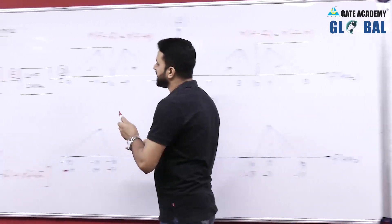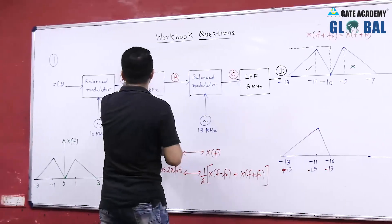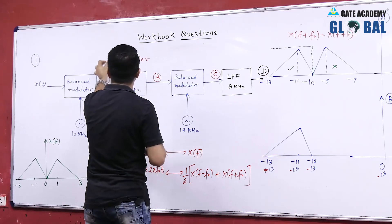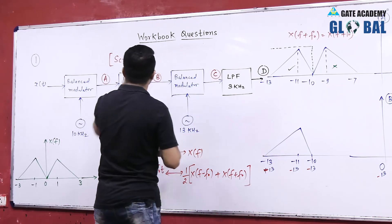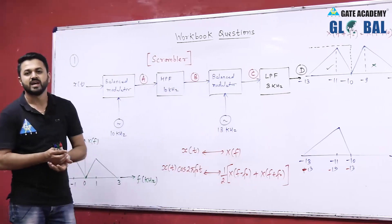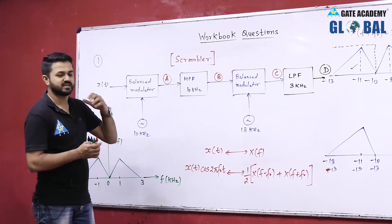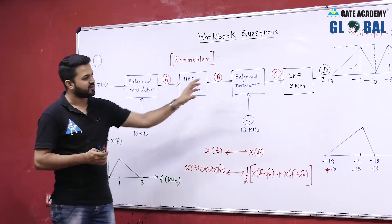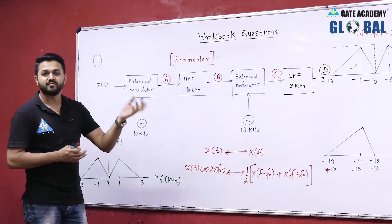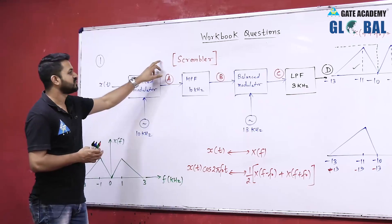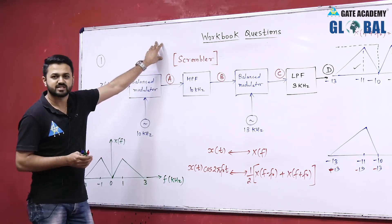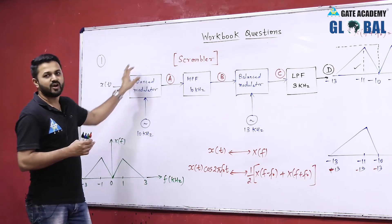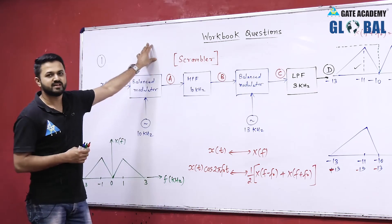This type of system is called a scrambler system, which was used for privacy purposes in telephone communication. If someone knows the message is in the range of 0 to 3 kilohertz, they still cannot detect the original message signal because the spectrum has been flipped at its own position.